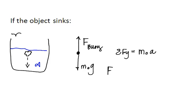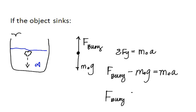Unbalanced, so you'd have F buoy minus the weight of the object equals M object A. Now what would the relationship between the buoyant force and the weight be if it's to sink? The buoyant force would be less than the weight of the object.